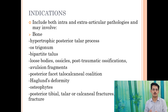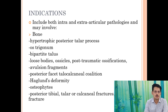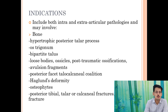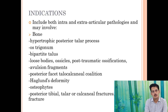Posterior impingement is diagnosed by two criteria: first, a positive posterior impingement test — forceful plantar flexion of the foot with a rotational motion that is painful; second, a painful tender spot on the posterolateral aspect of the ankle, just posterolateral to the tendo Achillis. Importantly, posteromedial pain is usually not due to posterior impingement — it is usually due to FHL tendon inflammation or other FHL pathologies. By definition, posterior impingement presents as posterolateral pain with localized tenderness on the posterior ankle.